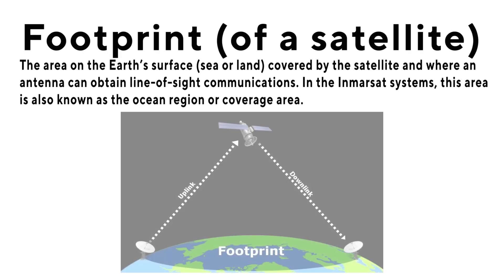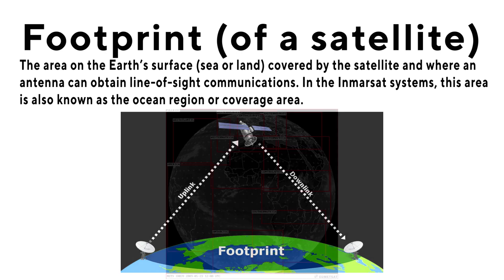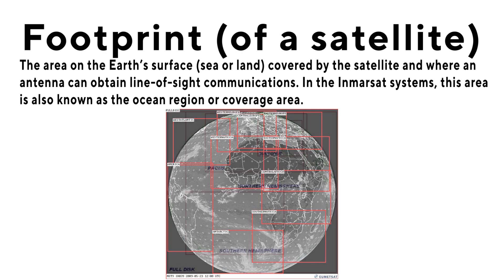Footprint of a satellite: the area on the Earth's surface — sea or land — covered by the satellite and where an antenna can obtain line-of-sight communications. In the Inmarsat systems, this area is also known as the ocean region or coverage area.